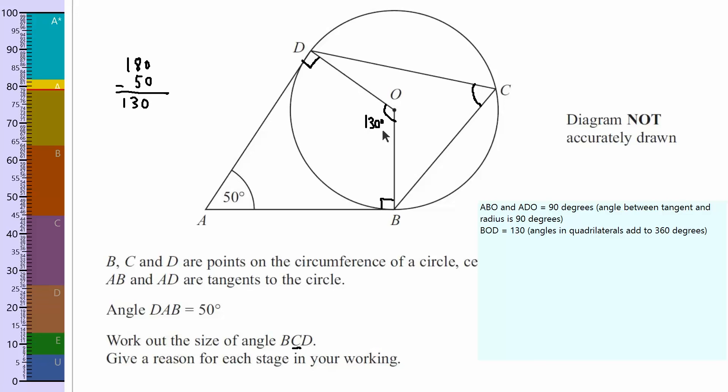Now, looking at this, there's another circle theorem we can use. If you notice, we've got an angle at the centre, and we're looking for the angle at the circumference. The circle theorem says the angle at the centre is twice the angle at the circumference. So if I flip that around, the angle at the circumference will be half of the angle at the centre. So I want to do 130 divided by 2, which will give me 65 degrees. So that one's going to be 65 degrees.